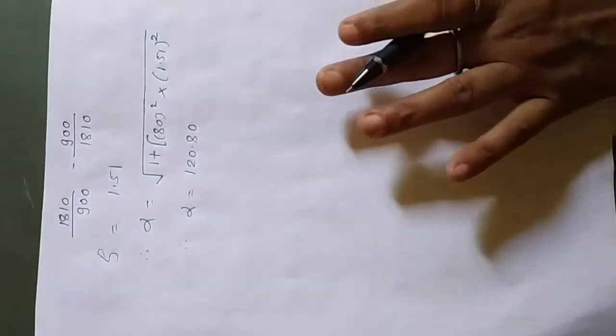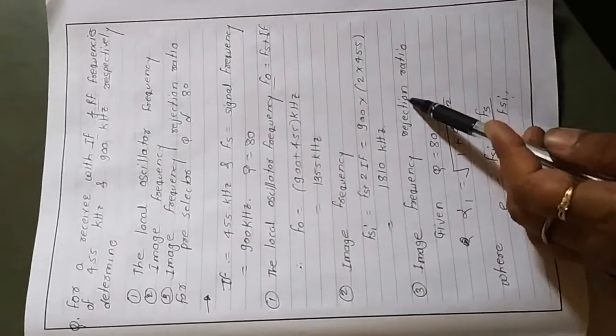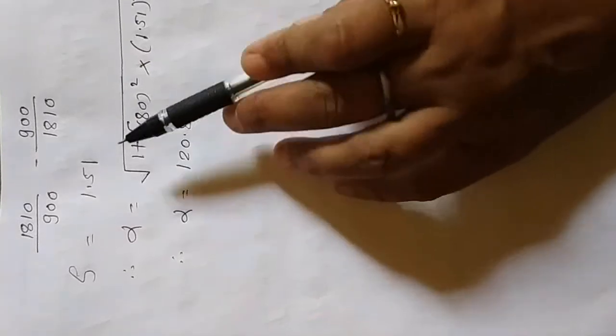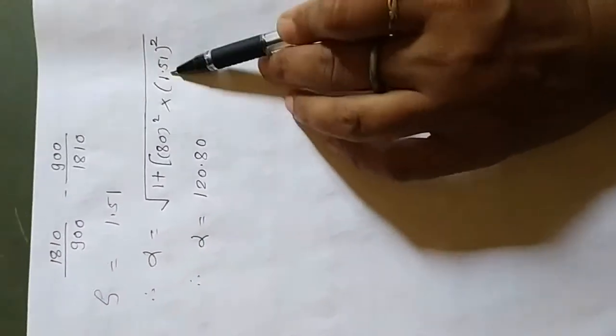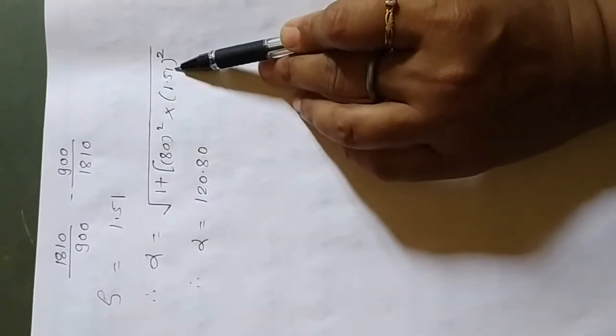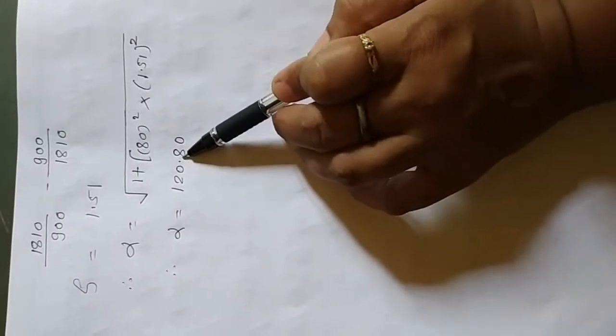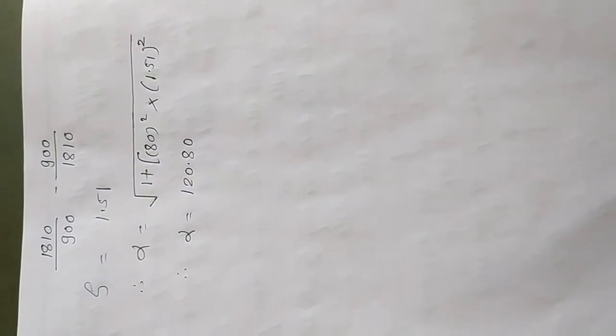With Q = 80 and ρ = 1.51, the image frequency rejection ratio is: alpha = sqrt(1 + 80² × 1.51²) = 120.80. This is again a unitless quantity. This completes all calculations related to image frequency rejection ratio for this example.